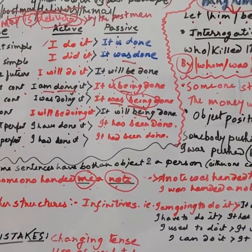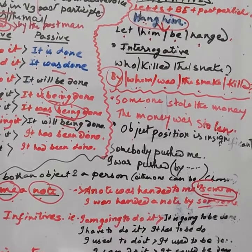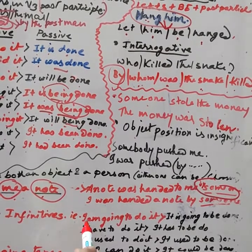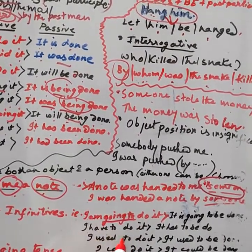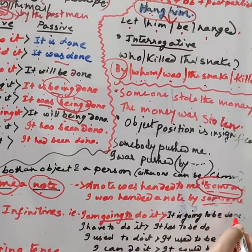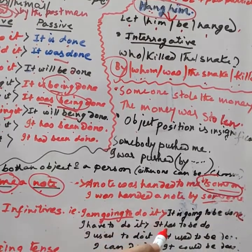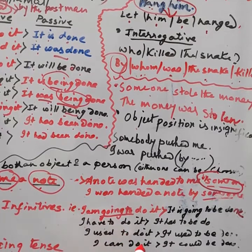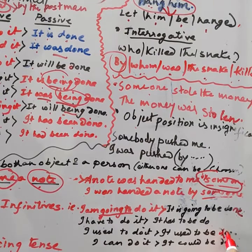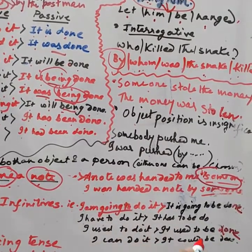Other structures involving infinitives: 'I am going to do it' → 'It is going to be done.' 'I have to do it' → 'It has to be done.' 'I used to do it' → 'It used to be done.' 'I can do it' → 'It could be done.'